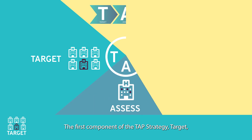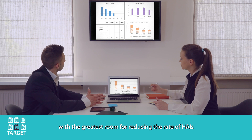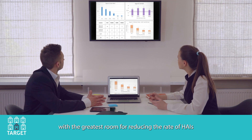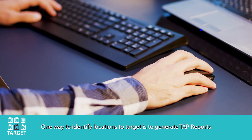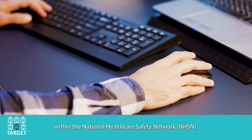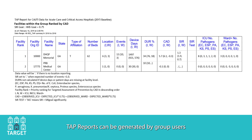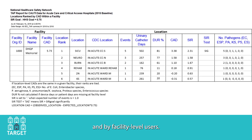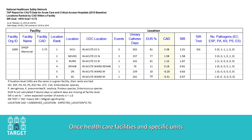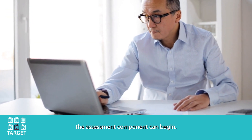The first component of the TAP Strategy, Target, works by using data to identify facilities and units with the greatest room for reducing the rate of HAIs and achieving their hospital safety goals. One way to identify locations to target is to generate TAP Reports within the National Healthcare Safety Network, or NHSN. TAP Reports can be generated by group users, such as health departments and healthcare systems, and by facility-level users. Once healthcare facilities and specific units with an excess burden of HAIs have been identified through the TAP Report, the assessment component can begin.